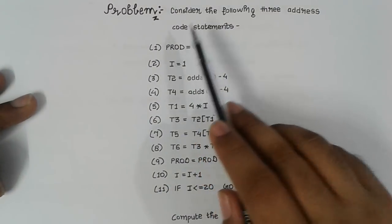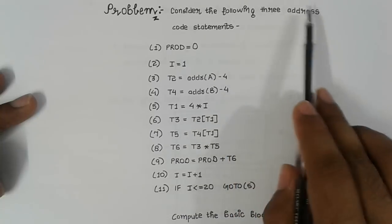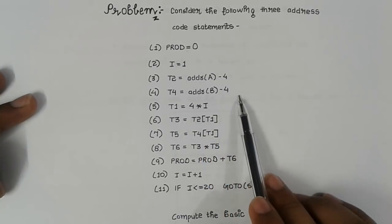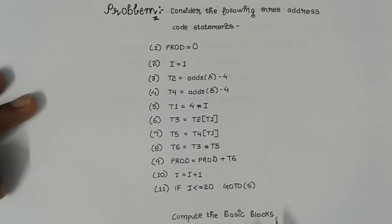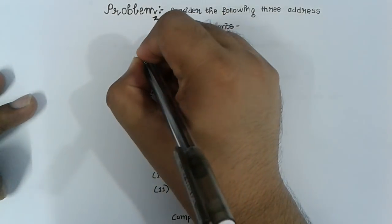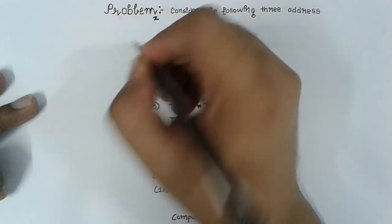This is the problem given to us: consider the following three address code statements. We are asked to compute the basic blocks. Now we start applying our rules. In Rule 1, we determine the leaders. The first point says the first statement is a leader — so in the given three address code, the first statement is our leader.